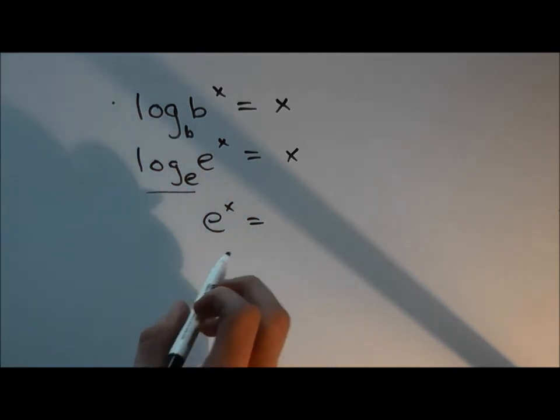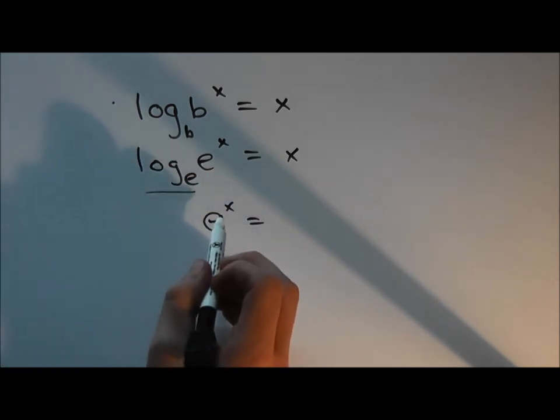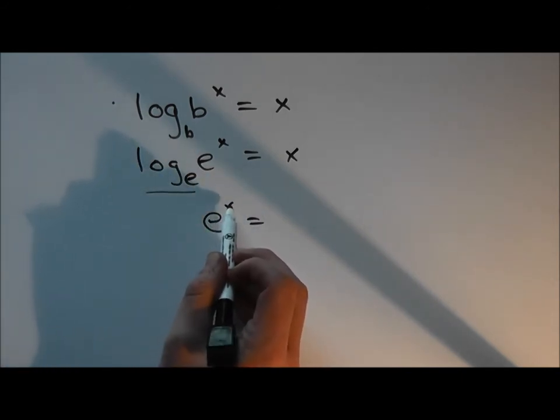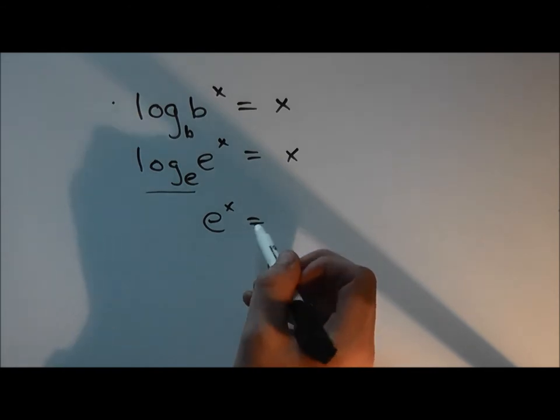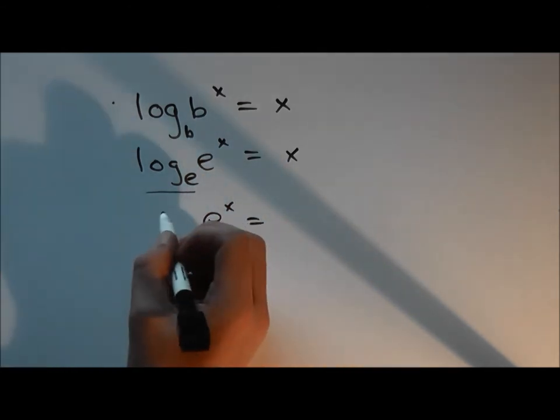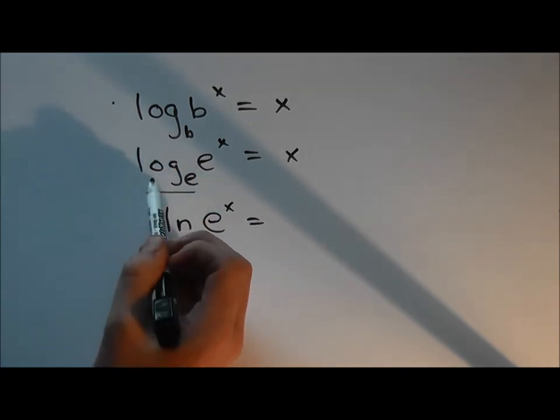However, we don't need to worry about that right now. We're just trying to solve and get x, which will be our k value, down so we can solve for k. And how we're going to do this is take the ln. ln is the inverse of log.